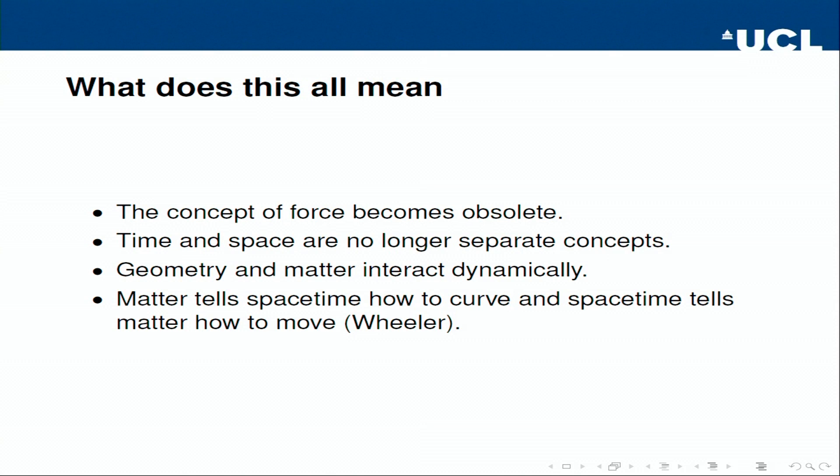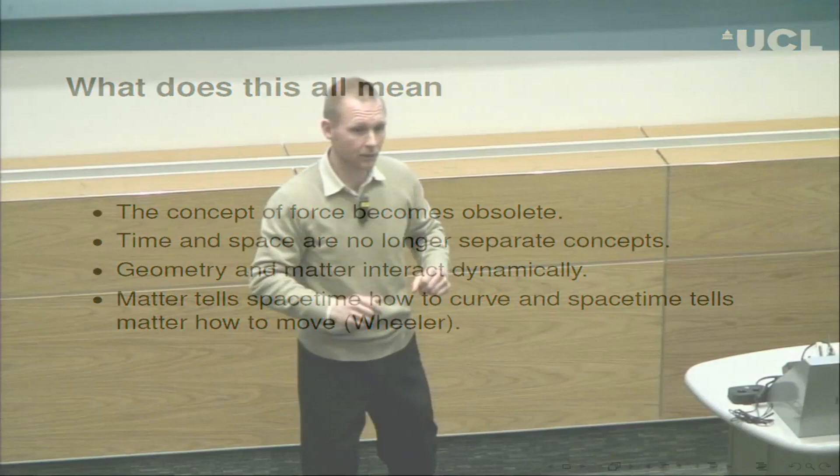Einstein's theory was confirmed quite quickly. Eddington famously observed a solar eclipse: during the eclipse, stars near the corona become visible, and comparing their positions with observations six months later shows they are slightly shifted. This is because the gravitational pull of the sun slightly bends light rays. Nowadays we can measure this very precisely without waiting for a solar eclipse — we can use radio signals.